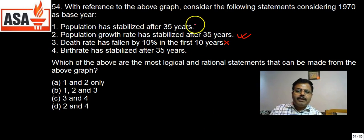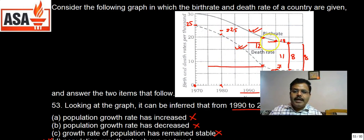This one is wrong. Fourth: Birth rate has stabilized after 35 years. Birth rate is stabilized. Let us see whether the birth rate is stabilized or not. So birth rate is stabilized - yes, this is a straight line, so this is stabilized after 35 years.